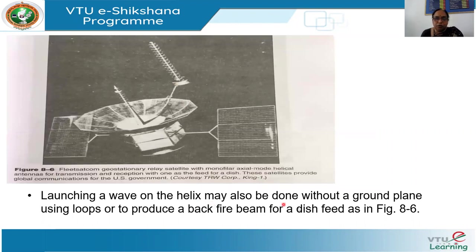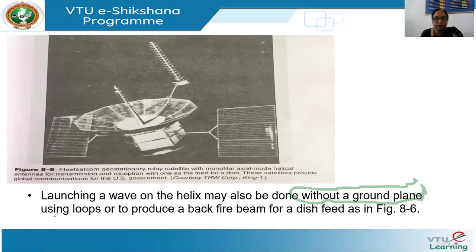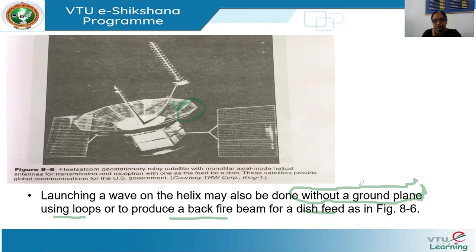You need not have a ground plane at all. Instead, you can use a loop antenna or a dish. For example, in a fleet SATCOM application, a dish feed is used to produce a backfire beam for collecting data. So instead of a ground plane, we have a dish feed.